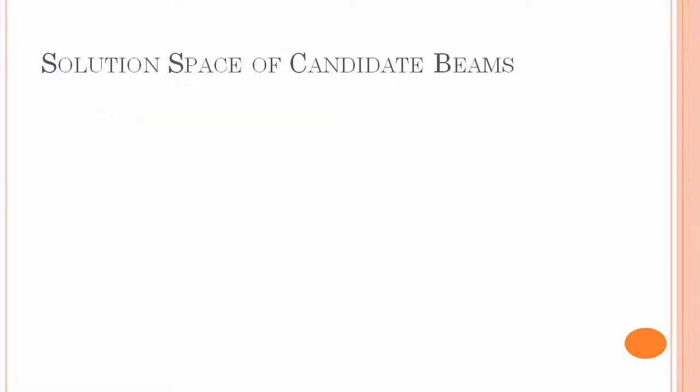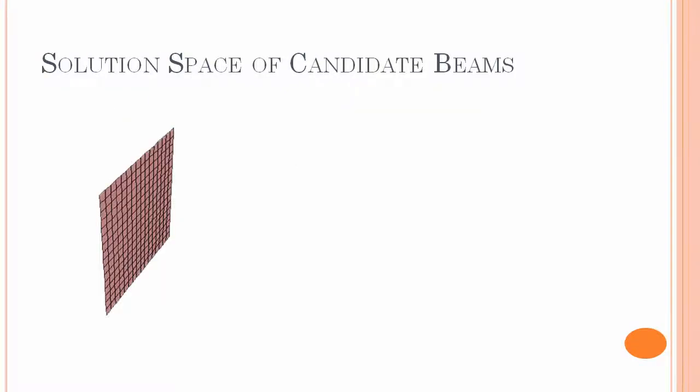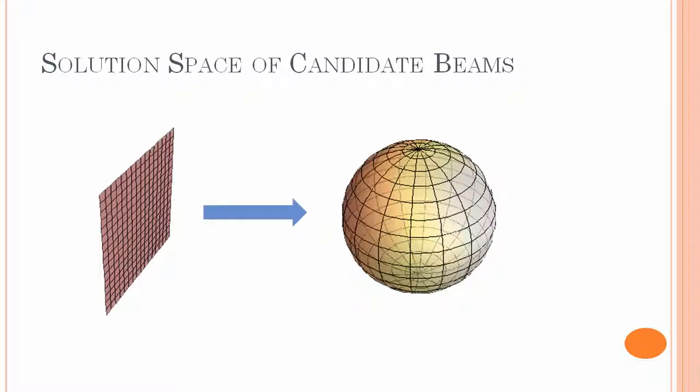What this means is that we move from a solution space of candidate beams of just a single plane, the coplanar plane, and we move into the entire 4Pi steradian. This is a much bigger problem to solve, but it gives a better answer since it includes the original solution space.